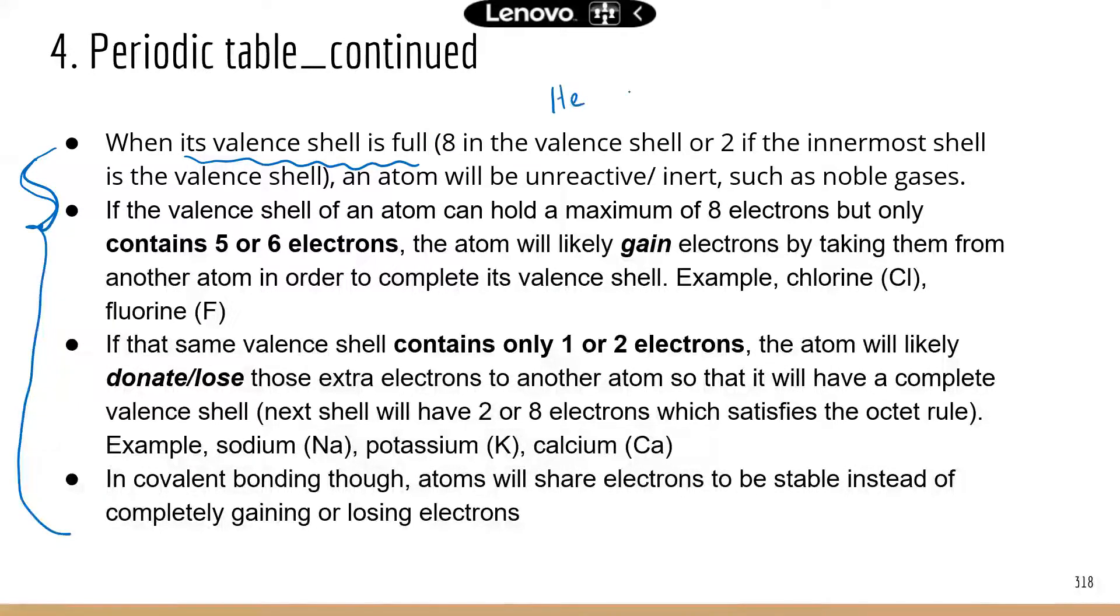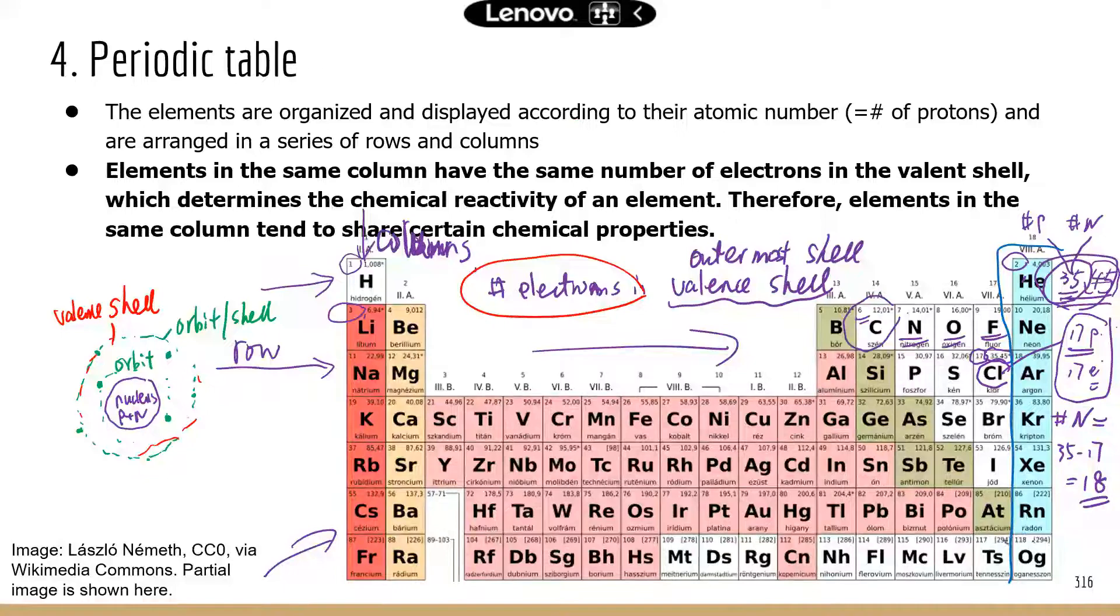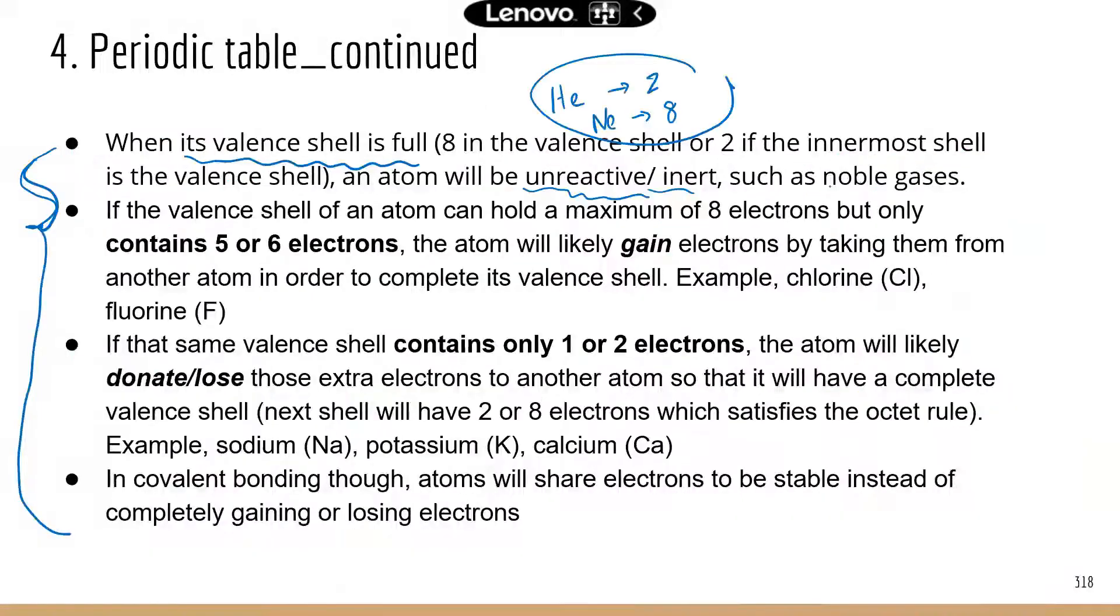First, if the valence shell is already full for an atom, like helium which has two in the valence shell and neon which has eight in the valence shell, these atoms will be stable. They do not have to gain or lose electrons. These elements are known as noble gases. If you look at this column, helium, neon, argon, all these elements have two or eight electrons in the valence shell.